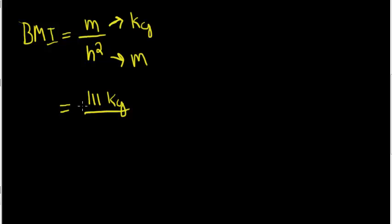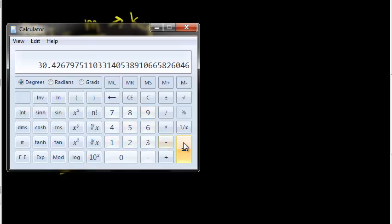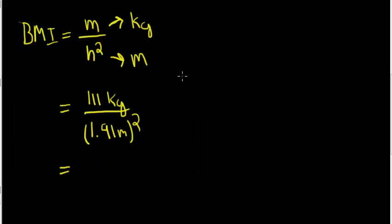We know that 191 centimeters equals 1.91 meters, and this is squared. Now we can take these values and plug them into our calculator, and we get an answer of 30.4.